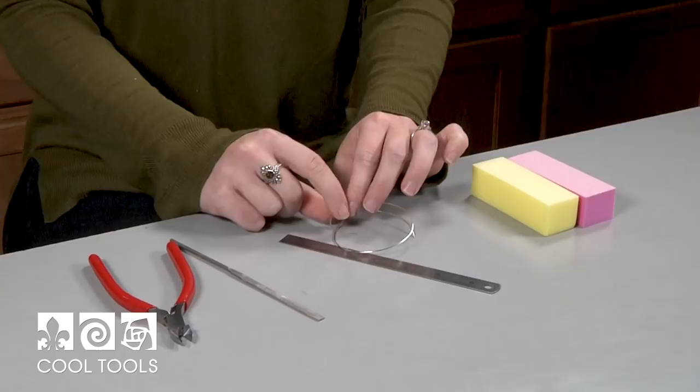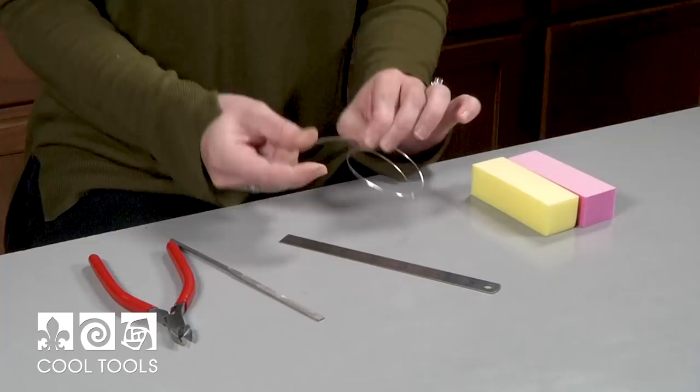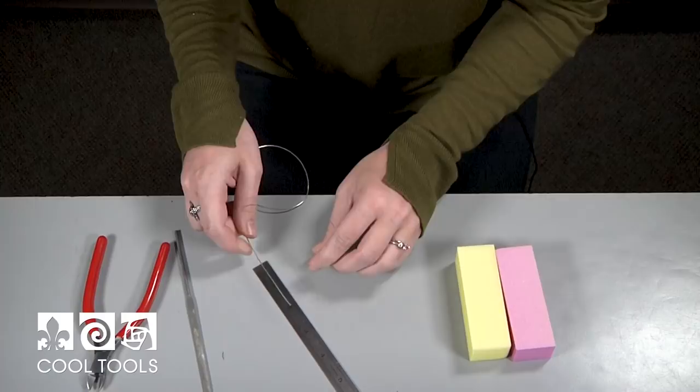I'm going to start off by cutting my wire. That way it's ready to go and embed into my clay. I'm going to be cutting my wire about two and a quarter inches long. That way there's a quarter inch to embed and you'll still have two inches of wire for the ear post.